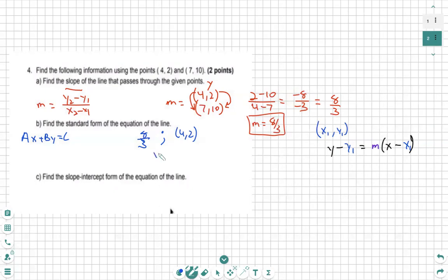So as we continue, y minus 2 equals, sorry, 8 over 3, m first, 8 over 3, times x minus 4.